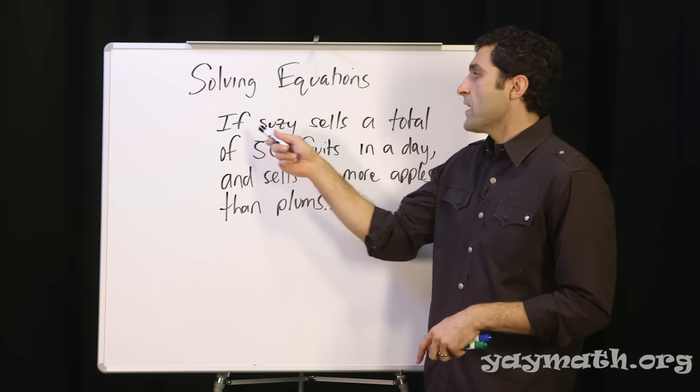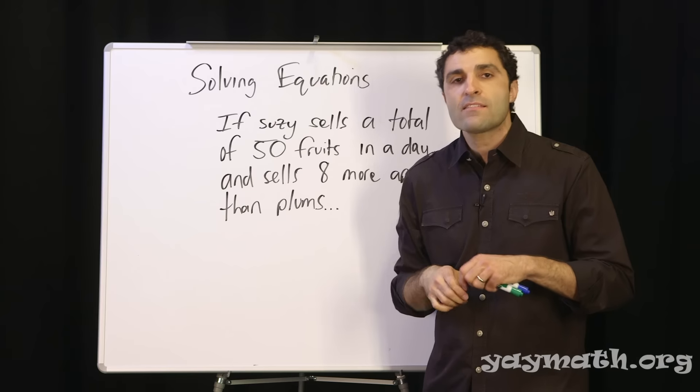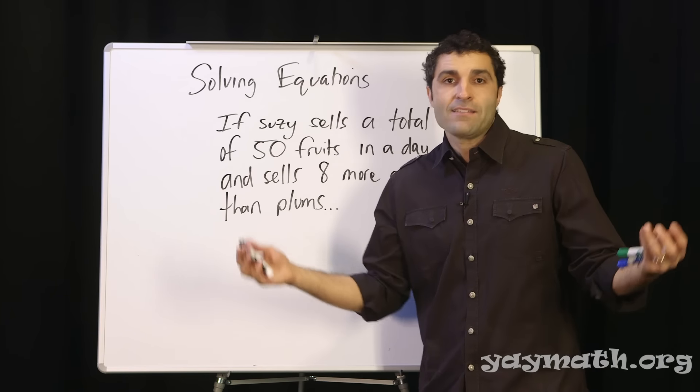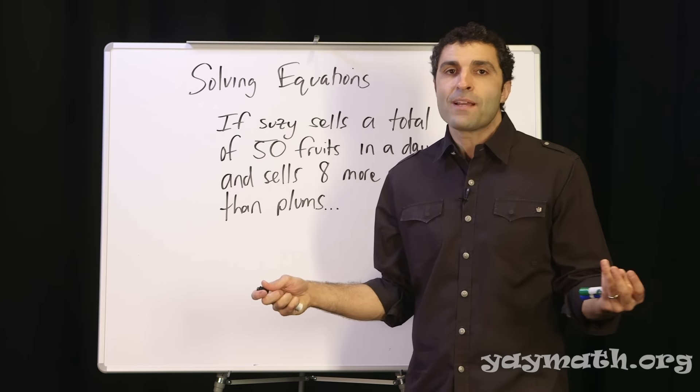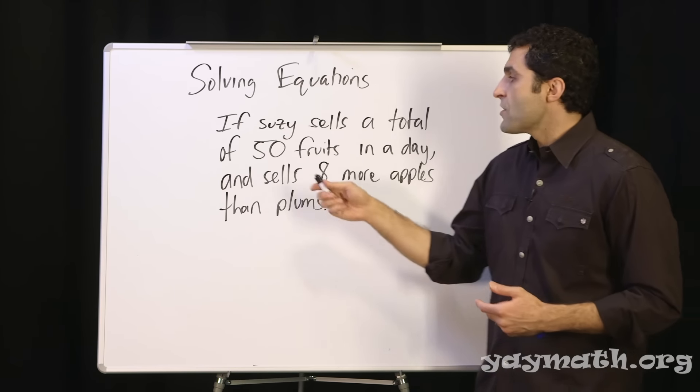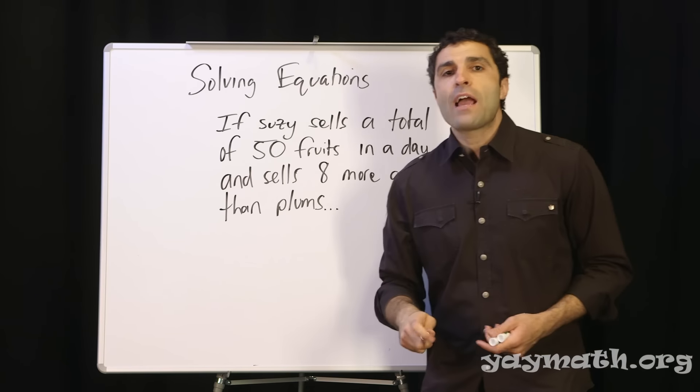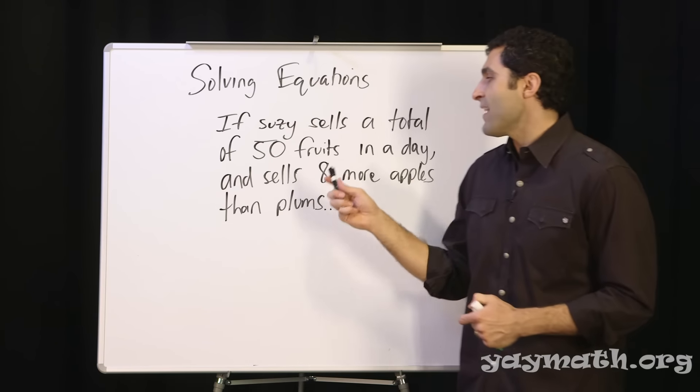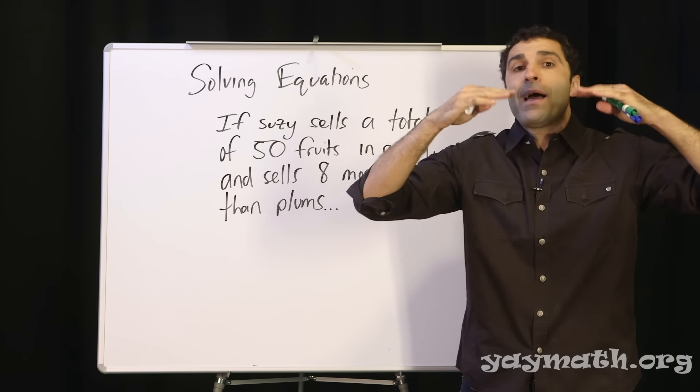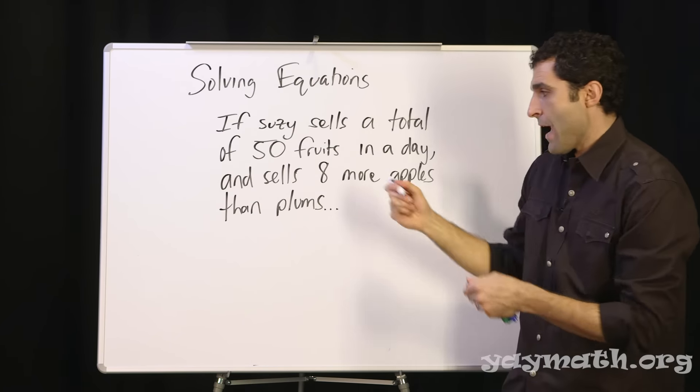So you have Susie here. If Susie sells a total of 50 fruits in a day, pause. Does that make sense? Think it through. Susie is selling 50 pieces of fruit. That's kind of a fun job. I'd probably eat my stock, but either way, she's selling 50 pieces of fruit. She sells eight more apples than plums. Eight more apples than plums. Can you picture that she's selling more apples than she's selling plums? It's not balanced anymore. More apples than plums. In fact, eight more apples than plums.